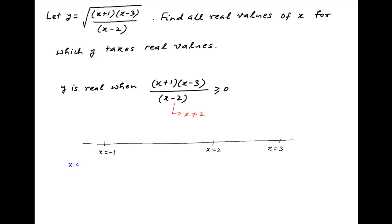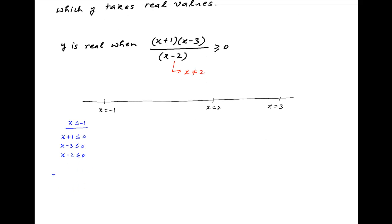Starting with when x is less than or equal to -1: x + 1 is negative, x - 3 is negative, and x - 2 is also negative. Therefore, the expression (x + 1)(x - 3) divided by (x - 2) will also be less than or equal to 0. It therefore follows that y is imaginary when x is less than or equal to -1.